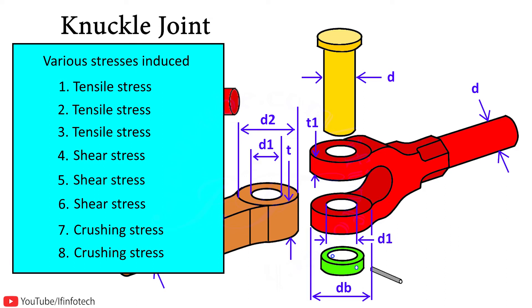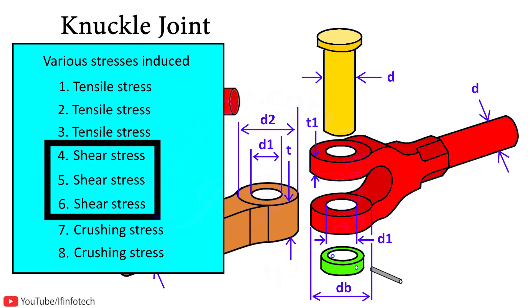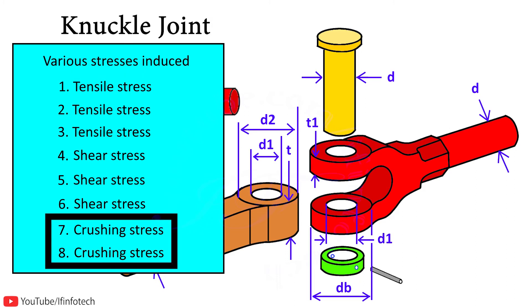Now let us analyze the types of failures that occur during application of the knuckle joint. We make a table of various stresses induced in the knuckle joint. There are 3 tensile stresses, 3 shear stresses, and 2 crushing stresses.